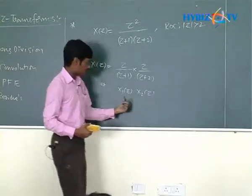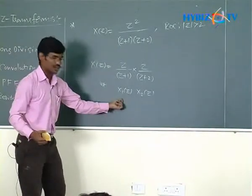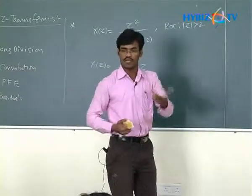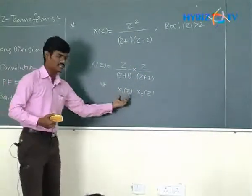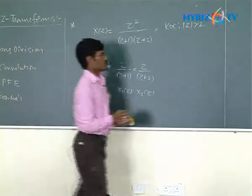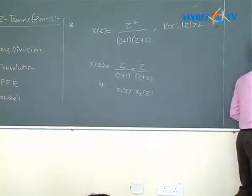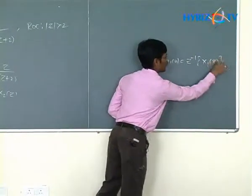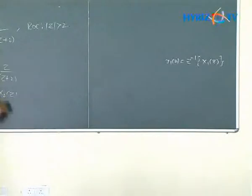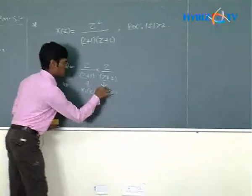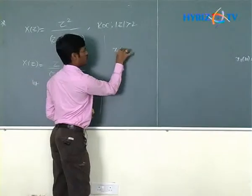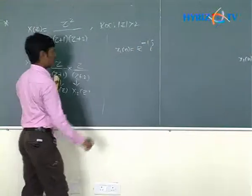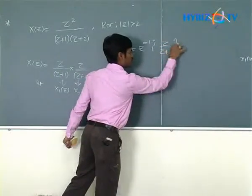To find X(n), we need X1(n) and X2(n). If we know X1(Z), we can find X1(n) by using standard functions or properties. By the inverse Z transform formula, X1(n) equals Z⁻¹ of X1(Z), which is Z⁻¹ of Z/(Z+1).